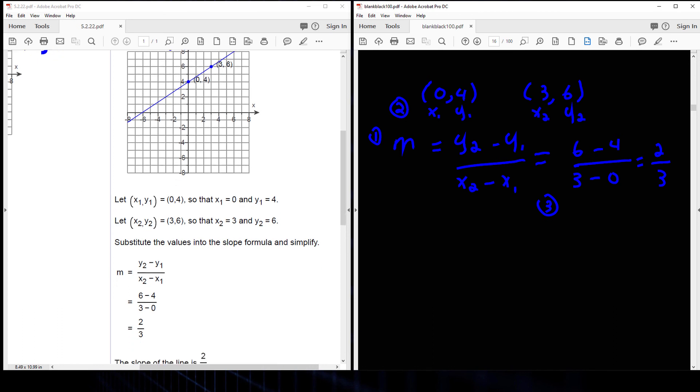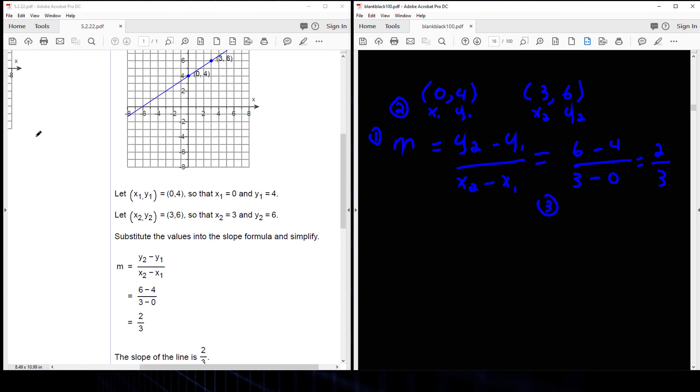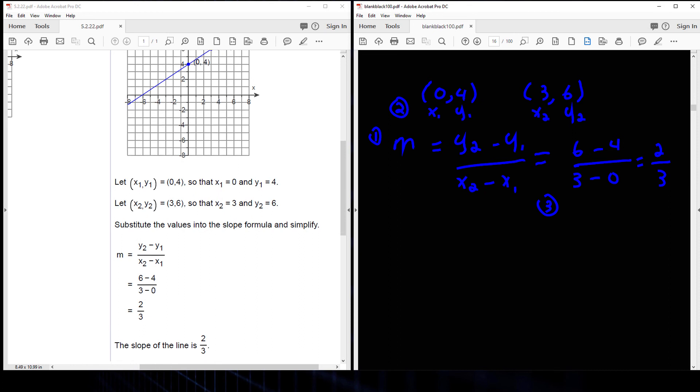So in this case, my slope is 2 thirds. That is the slope between those points.